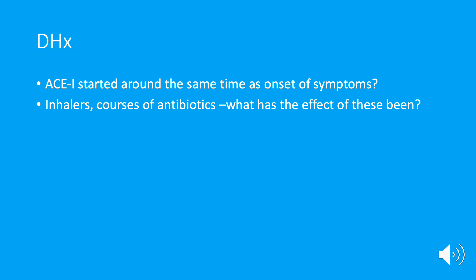With drug history, think about ACE inhibitors — they can cause a dry cough, but remember the timing: it should start roughly around the time the ACE inhibitor was started, not four years later, and it will be a dry cough with no other features. A beta blocker can cause shortness of breath in people who are asthmatic. Ask about inhalers that have been prescribed, courses of antibiotics and steroids, and what effect these have had — does every course of antibiotics and steroids totally relieve their symptoms, or make no difference? This gives an idea of the working diagnosis.